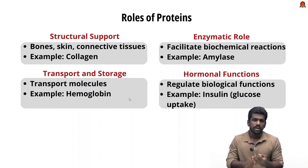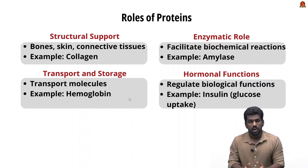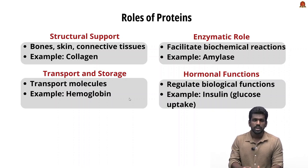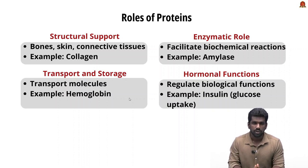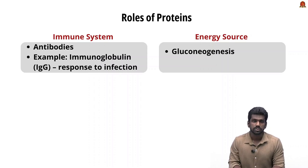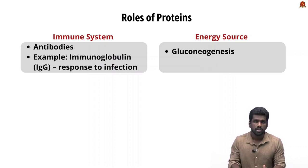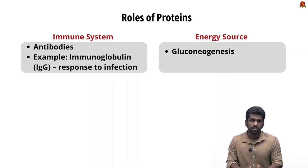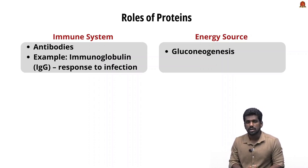Proteins also function in the immune system — antibodies, which are made up of proteins, are crucial for immune defense. For example, immunoglobin antibodies are produced by the immune system. Additionally, when other energy sources such as carbohydrates and fats are depleted, proteins can be used to generate energy. During prolonged fasting or starvation, muscle proteins are broken down to provide energy — a process called gluconeogenesis.